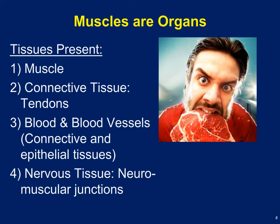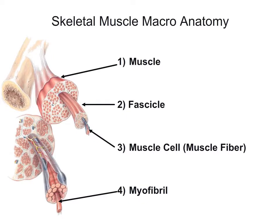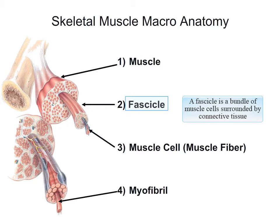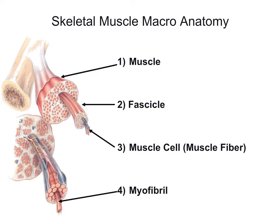Here's a brief overview of skeletal muscle macroanatomy — macro means big, so we're looking at very large macroscopic structures. Here we can see a bisected muscle, perhaps the biceps brachii. The muscle is divided into units called fascicles — bundles of muscle cells surrounded by connective tissue. You've probably seen these if you've eaten corned beef or pastrami. Within a fascicle we find individual muscle cells, also called muscle fibers because skeletal muscle cells can be very long and fibrous.